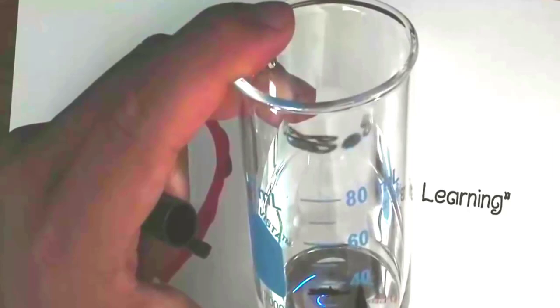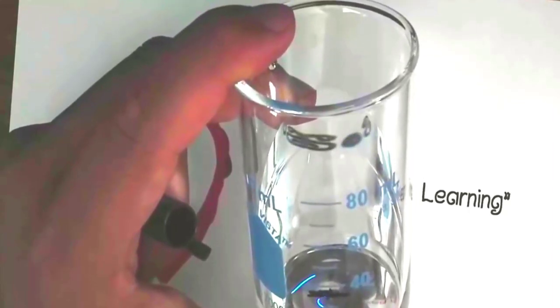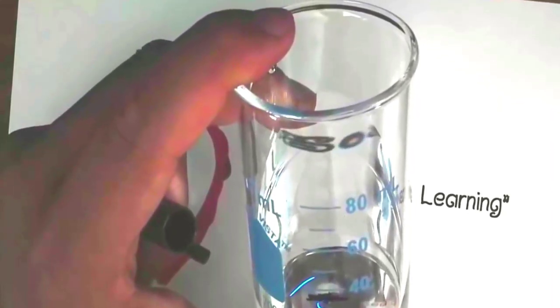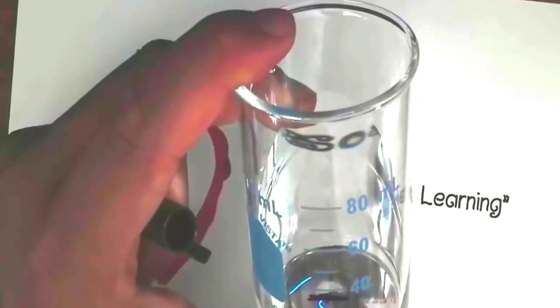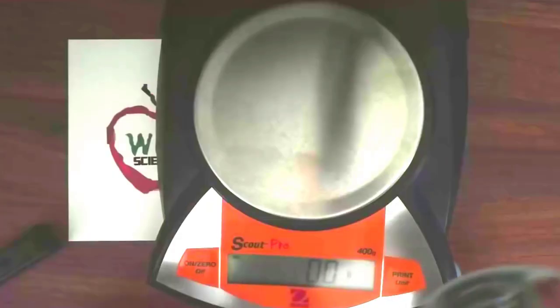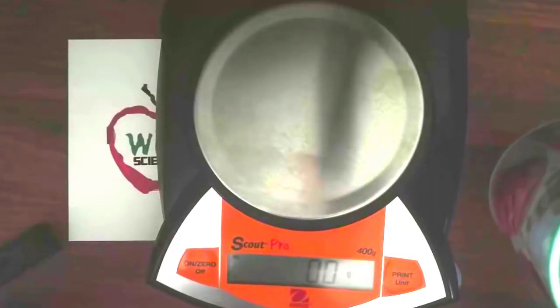And if we look at the meniscus level, which is right here, we have 20 to 40. So each one of the increments is 10, so 20, 30. So that is about 37, 38, or 36 right there. So that would be the volume of water.